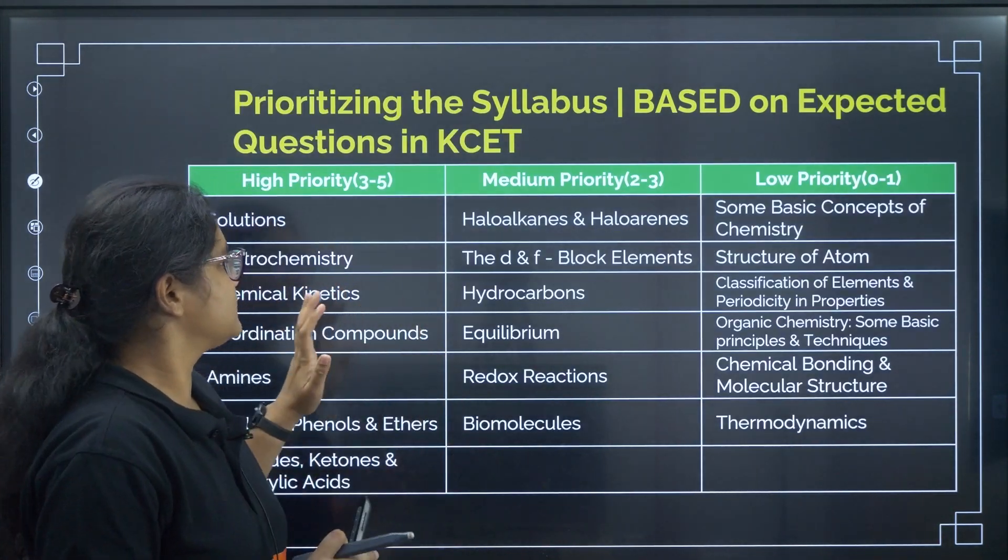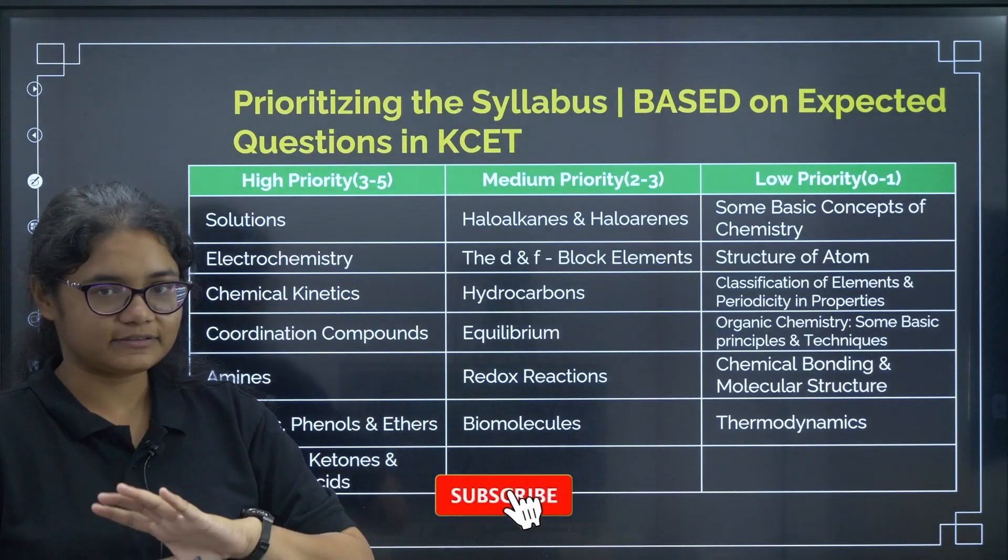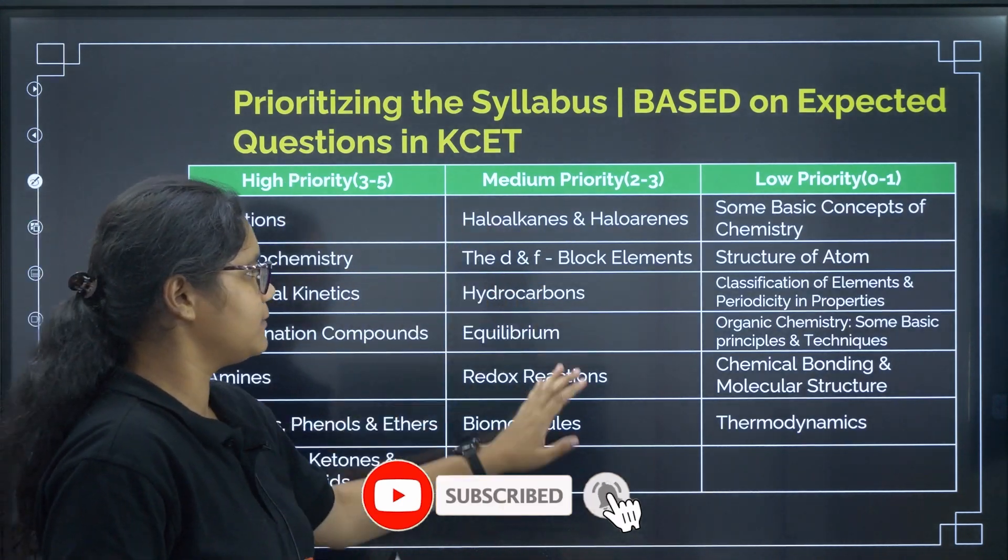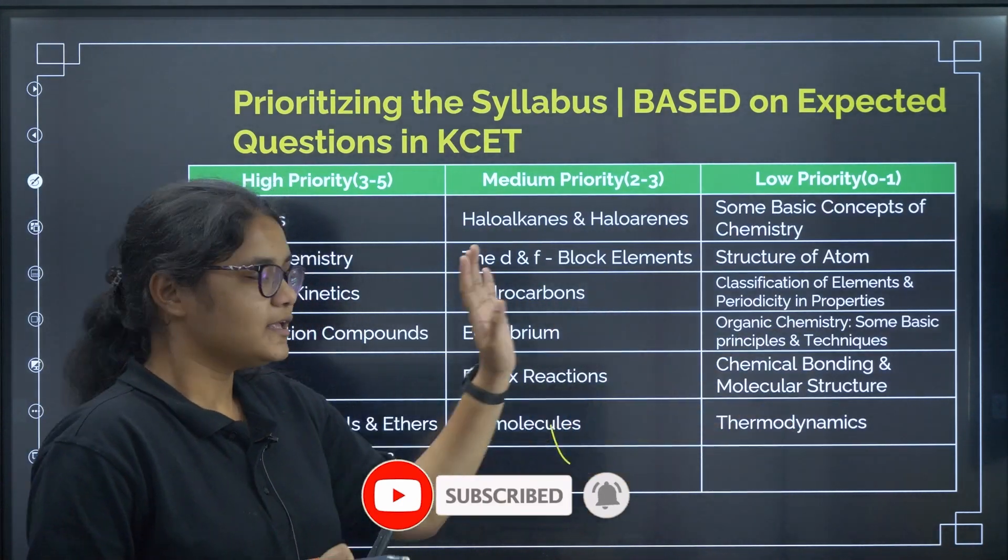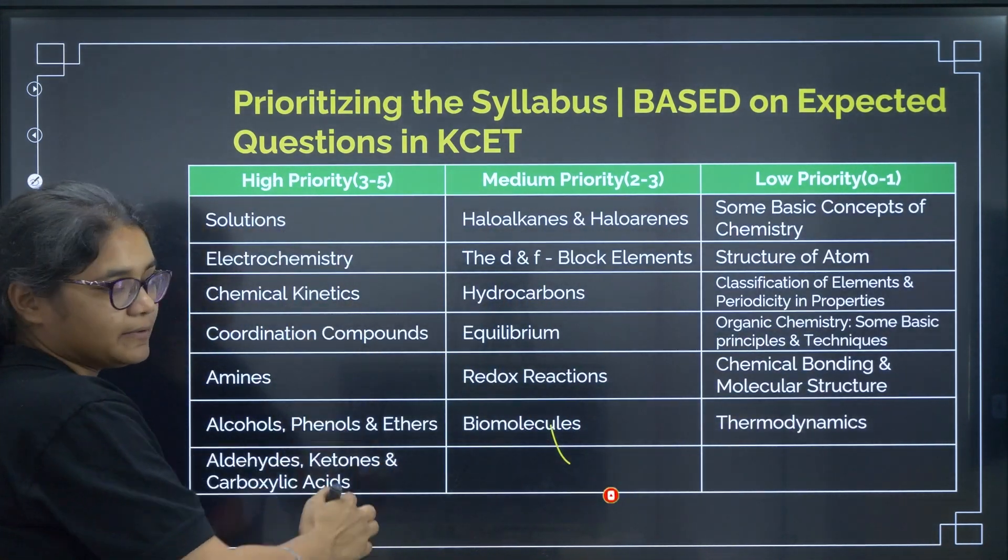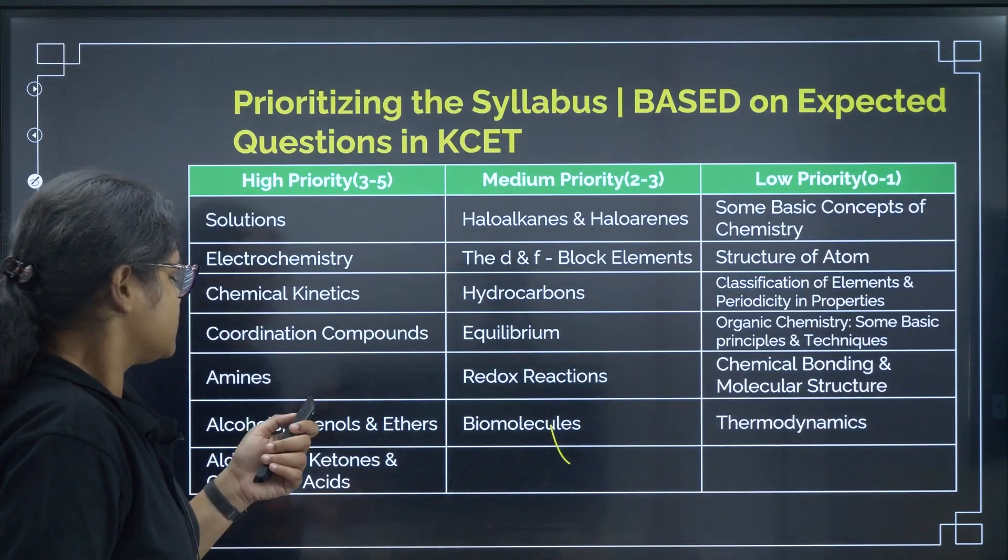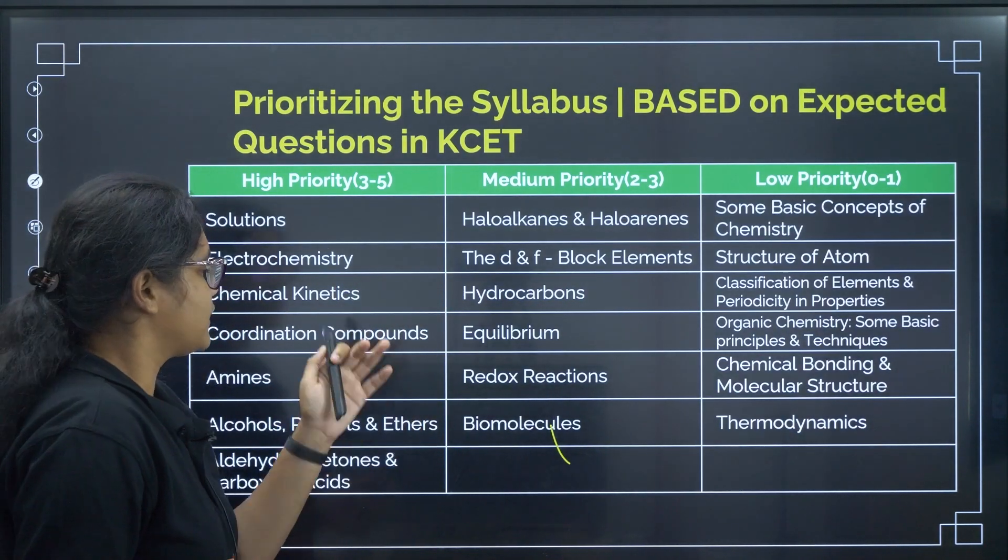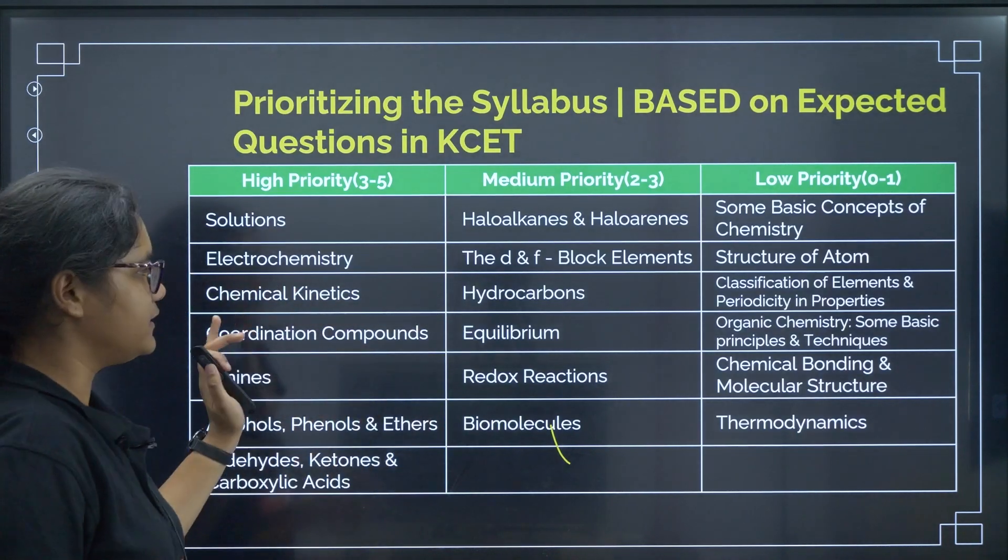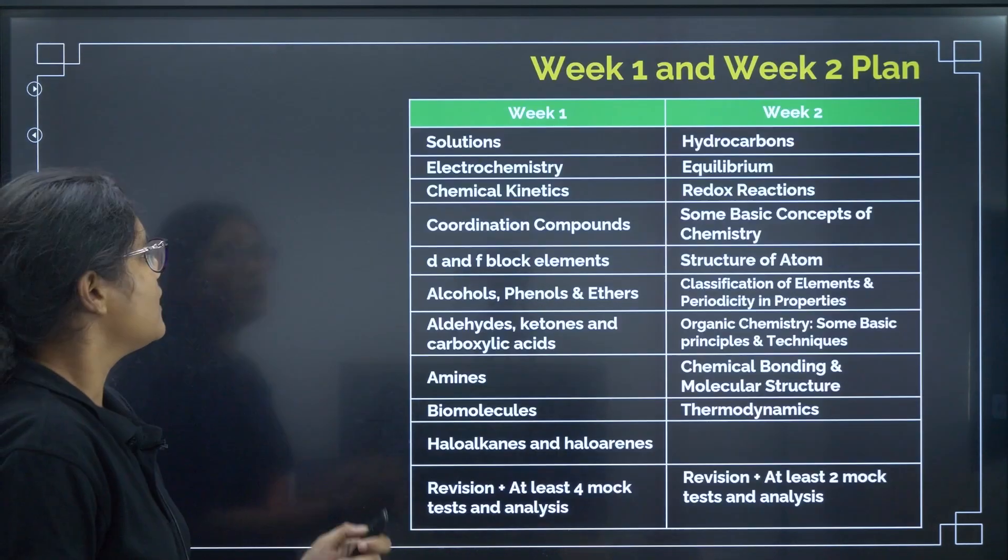This is what I have already discussed in my 30-day strategy video, the high priority, medium priority and low priority chapters. So, you can just check the list of these chapters. If these are not completed, you have to first give importance and complete them. You can just take a screenshot of this, keep the list of the chapters if you don't have.